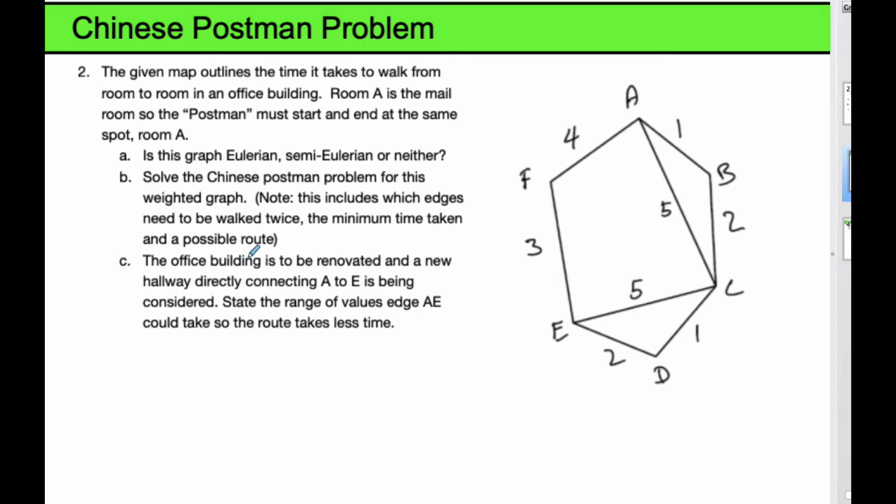Okay, so for this problem here we are going to do the Chinese Postman Problem. It's the type of problem that talks about going down each edge in as efficient a manner as possible. If all the degrees, if it's Eulerian, then you add up all of the edges and that is the solution to the shortest path.